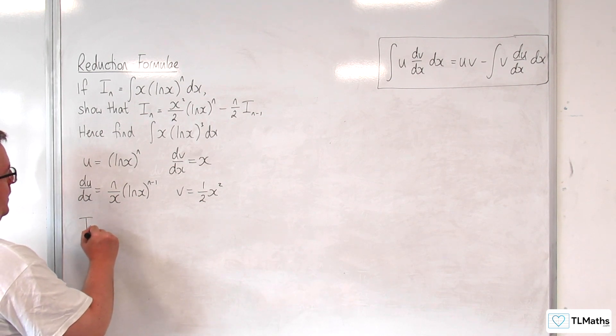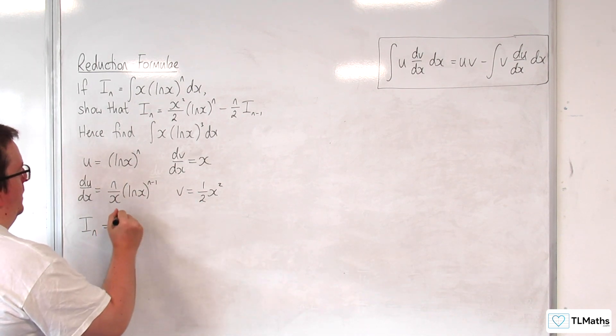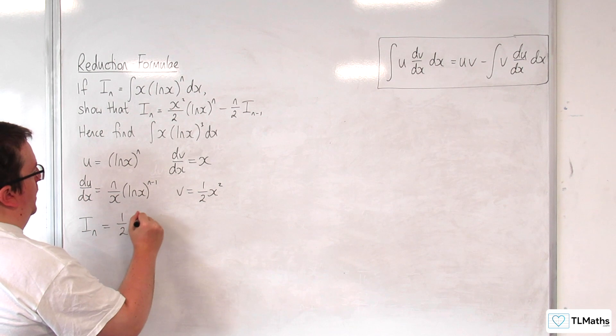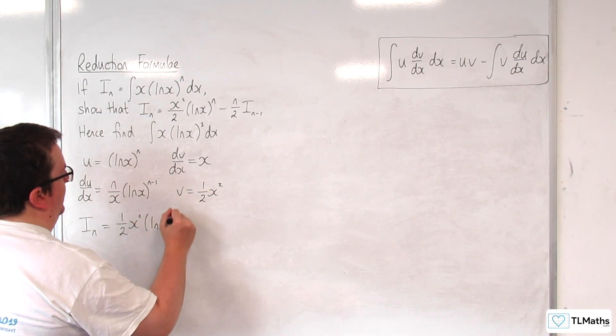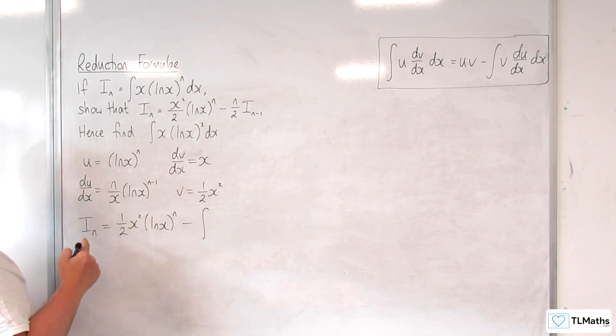So i_n will be equal to u times v, so 1 half x squared log of x to the n, take away the integral of v du by dx.